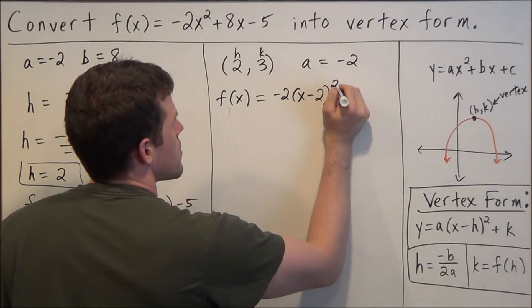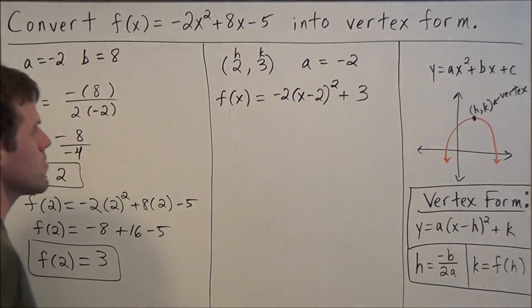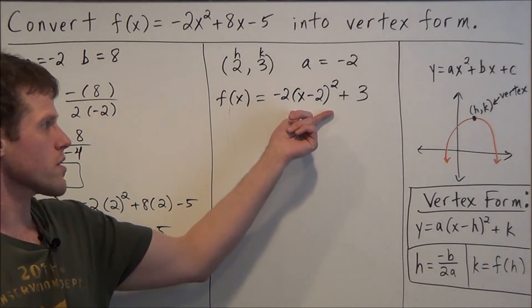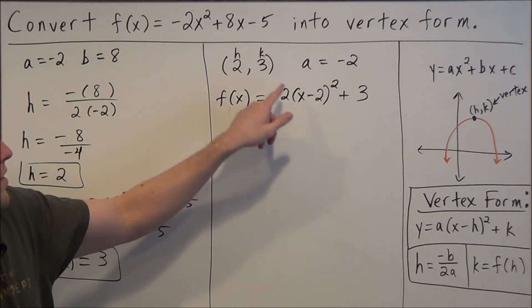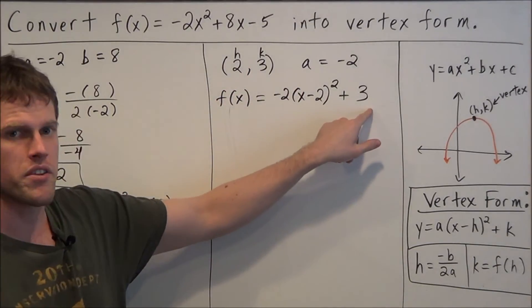And then plus k is equal to 3. Just know the h value 2 is going to change signs. So we're going to have x minus 2 squared and then k is going to stay the same. We're going to keep k, so we'll have positive 3 at the end here.